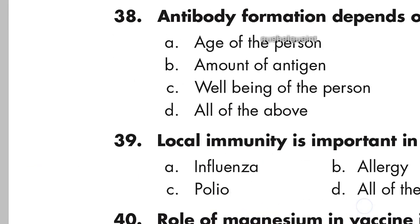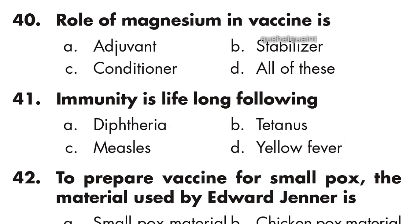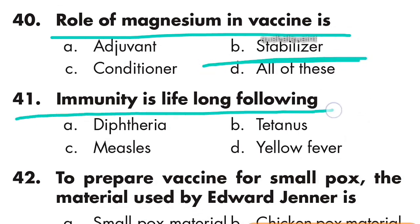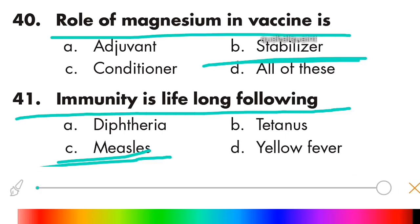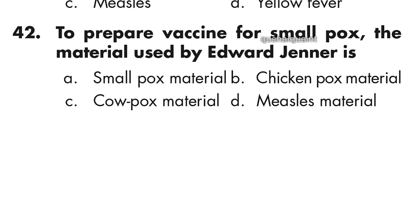Question 39: Local immunity is important in influenza, allergy, and polio — option D, all of the above, is right. Question 40: Role of magnesium in vaccine is as a stabilizer, option B is right. Question 41: Immunity is lifelong following measles, option C is right.